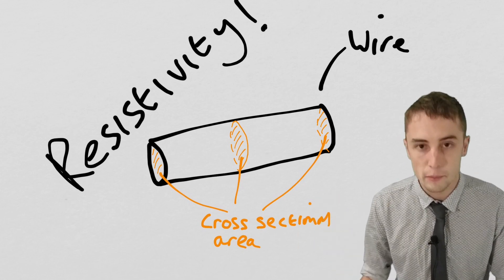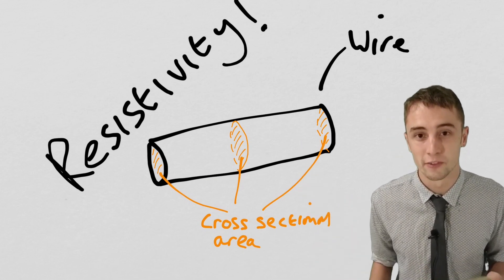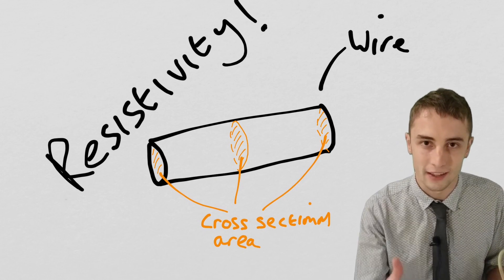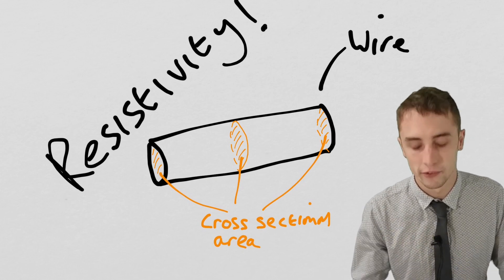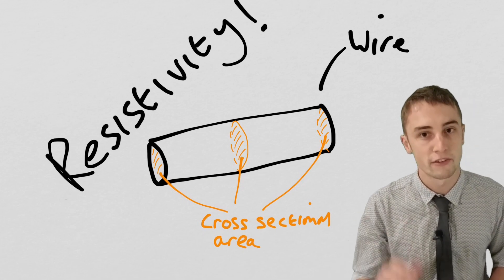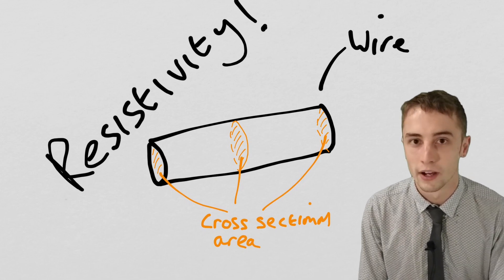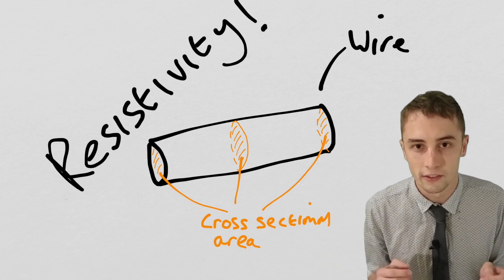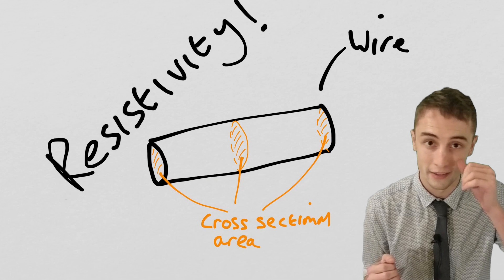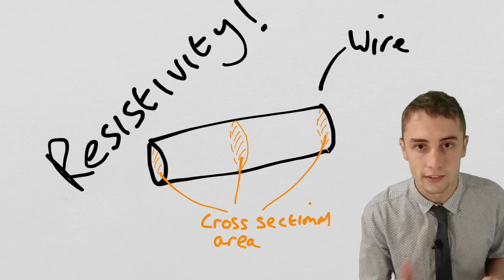The third thing it's going to depend on is the material itself — specifically a property called resistivity. The resistivity of a material just means how good that thing is at resisting current. For example, a copper cable is going to be very poor at resisting current, so it's going to have a very low resistivity. It's important to know that it doesn't matter how big or how long or how thick your copper is — it's the material itself that has the property, and it's always going to have the same resistivity.